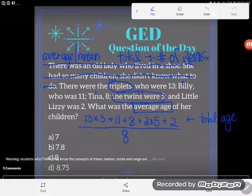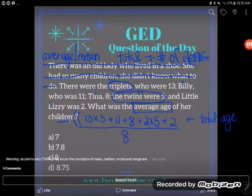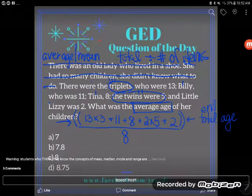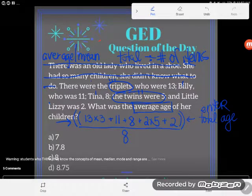Okay so what I'm going to do is I'm going to type in this entire top line here just exactly as I see it into my calculator. 13 times 3 plus 11 plus 8 plus the 2 times 5, the two 5 year olds, plus the 2 year old. And I'll get this total of their ages, their total age is 70. It's super important that you press enter to get the total age before you ever divide. You should press enter to get the total age.